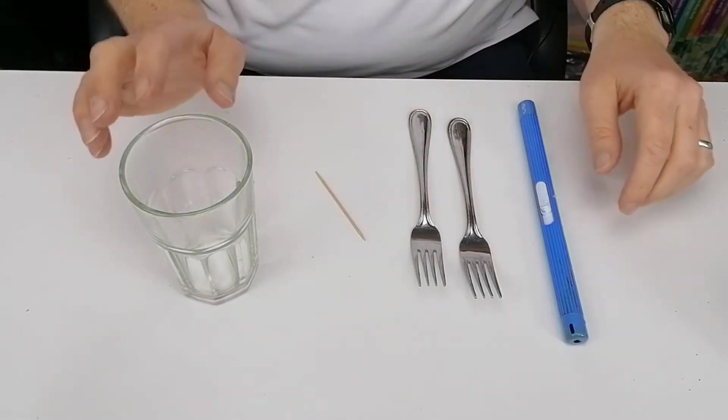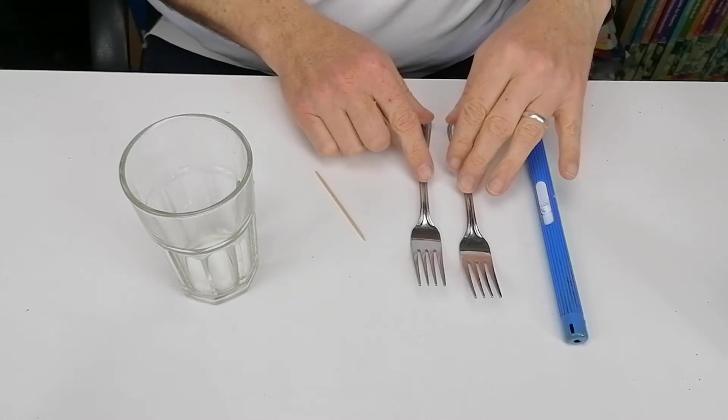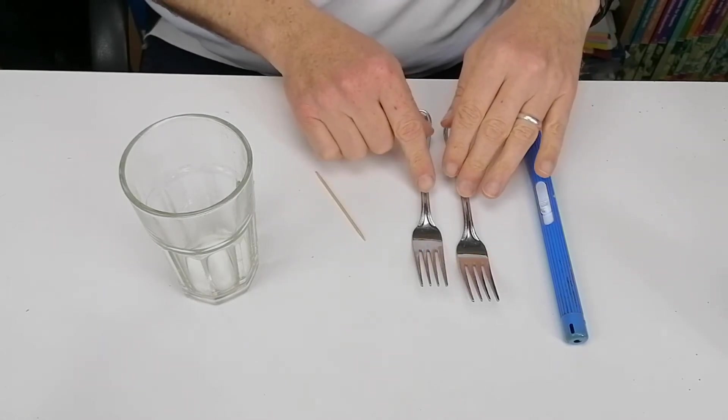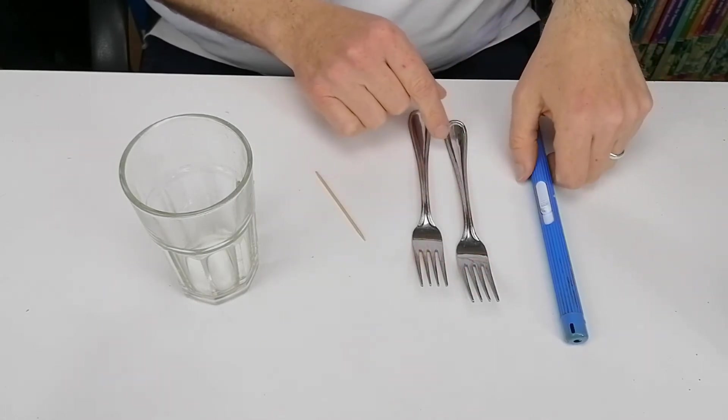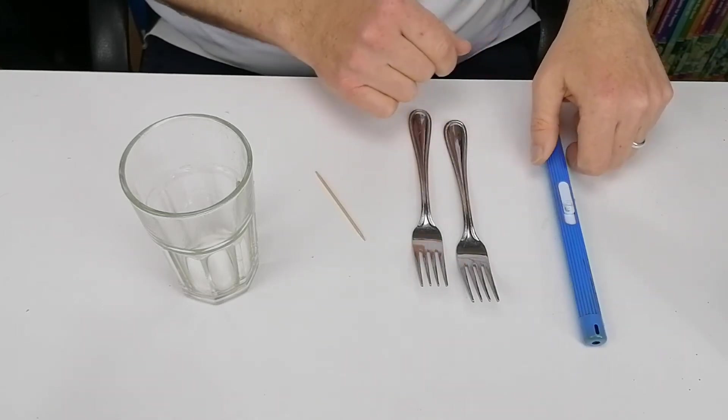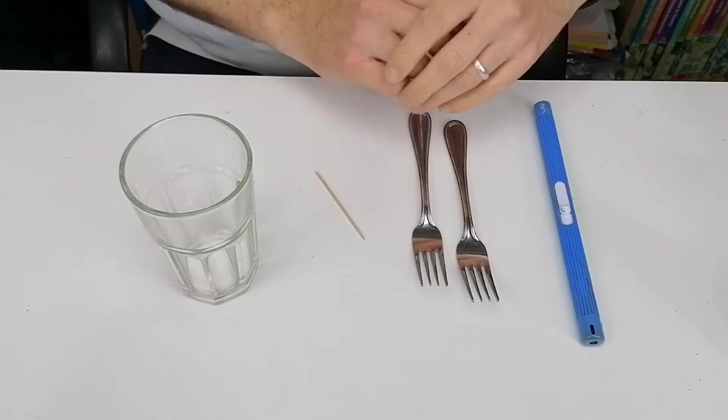So what you're going to need is a glass, a toothpick, two identical forks. You might need to try different forks to get them to work, and then a lighter. Because we're using a lighter in this case, this will have to be done by an adult.